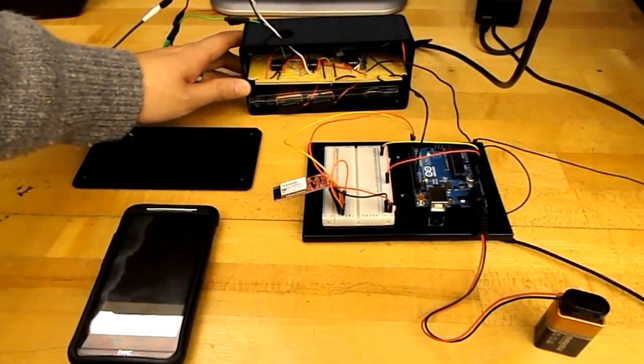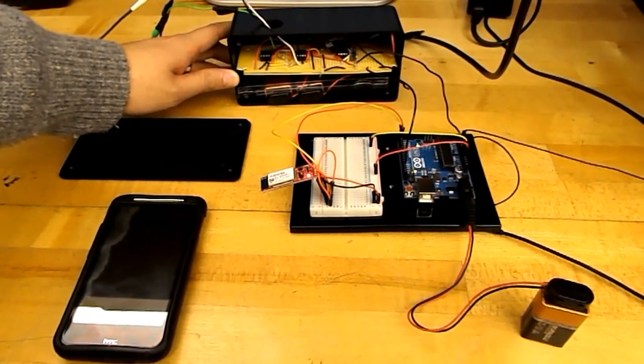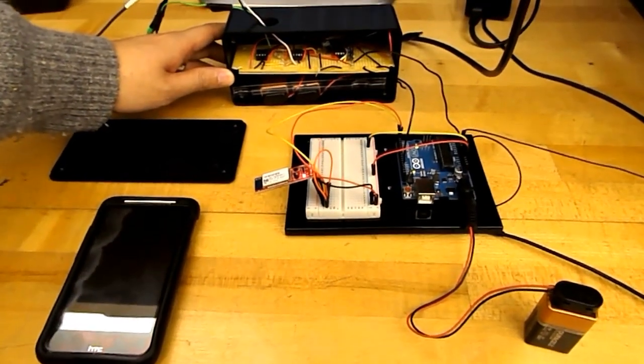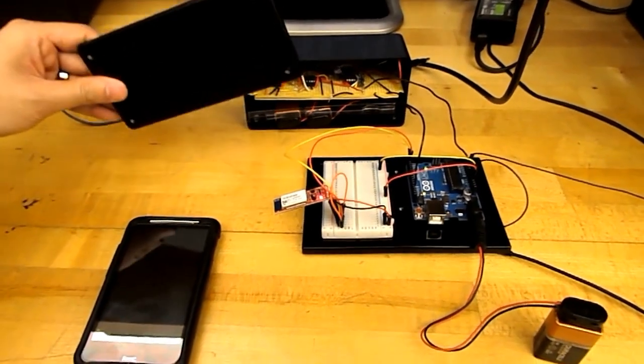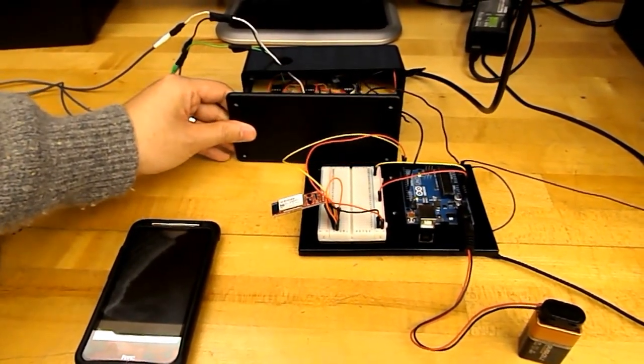This is our portable ECG with wireless monitoring. This is our prototype box. We left it open so you can see the inside of it. This is the original cover of it which would cover it up. It goes on top like this.